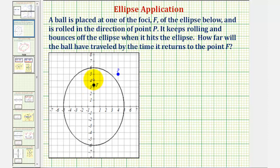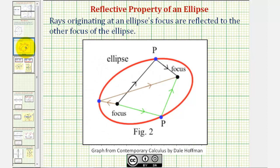To answer this question, we need to be aware of the reflective property of an ellipse, which states that rays originating from an ellipse's focus are reflected to the other focus of the ellipse. Which means if we start at this focus and form a ray in this direction, it would bounce off the ellipse and return to the other focus here on the right.